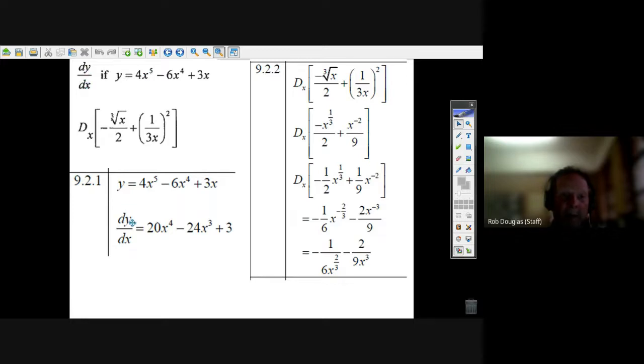dy dx, the derivative is, and all we do is we take the exponent, multiply it by the coefficient, and subtract 1 from it. So 5 times 4 is 20, 5 minus 1 is 4, so it's 20x to the fourth.